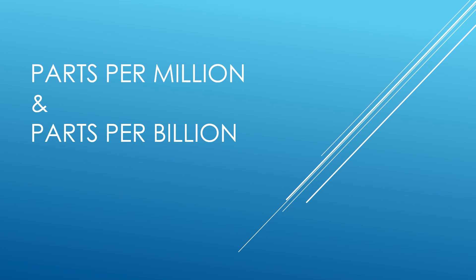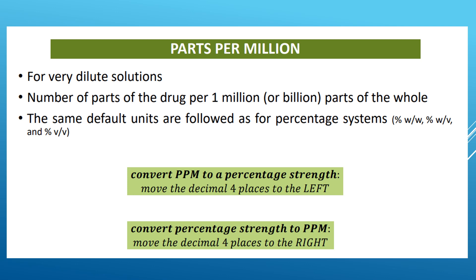Now we are going to talk about parts per billion and parts per million, or PPM and PPB. These are the measures of a very dilute solution. Parts per million refers to the number of parts of a drug per 1 million or billion parts of the whole.